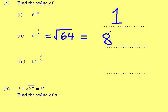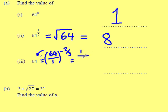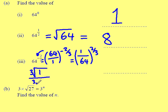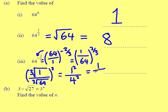64 to the power of minus 2 thirds. Deal with the reciprocal — the minus first. Change it to a fraction, then turn that fraction upside down, leaving me with 1 over 64, all to the power of 2 thirds. Split it into two parts: the cube root of 1 over the cube root of 64, and all of those numbers will be squared. The cube root of 1 is just 1, the cube root of 64 is 4. Not forgetting to square the top and the bottom, giving a final answer of 1 over 16.